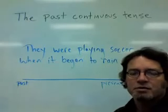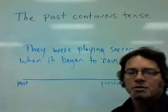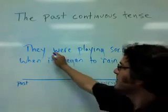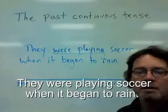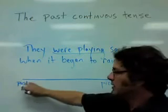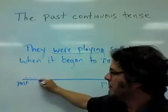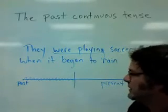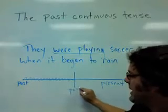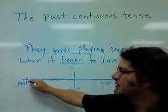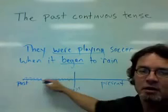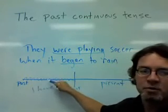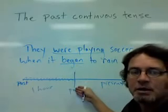The past continuous tense is often used when some action is interrupted by another action. For example, 'They were playing soccer when it began to rain.' So here we are in the past, and 'playing soccer' is happening over a period of time — perhaps one continuous hour of playing — and then suddenly it began to rain.